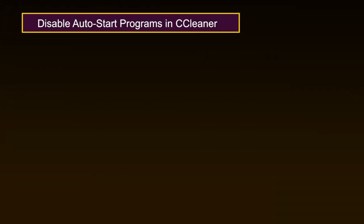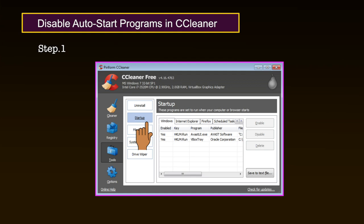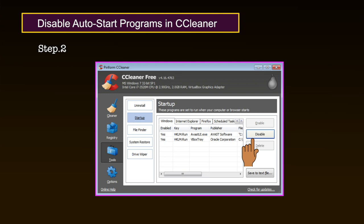Now let us see how to disable auto-start programs in CCleaner. An auto-start program is configured to automatically start itself whenever you turn on your computer. Auto-start programs may make demands on finite system resources and slow down your computer at startup time. Step 1: Click on the Tools tab and then click Startup to activate the following screen. Step 2: Select a program from those listed in the startup pane and then click Disable so it does not automatically start running when you turn on your computer.